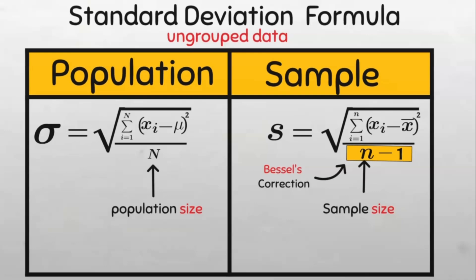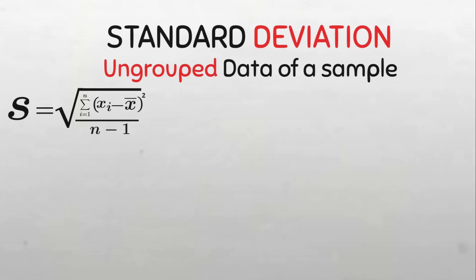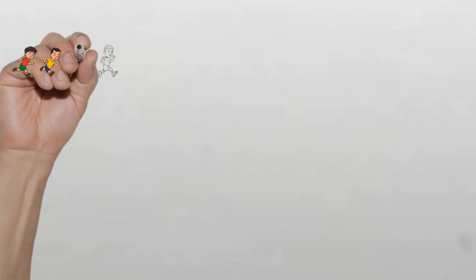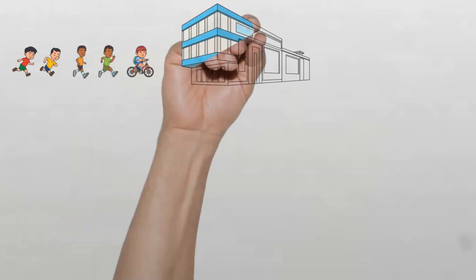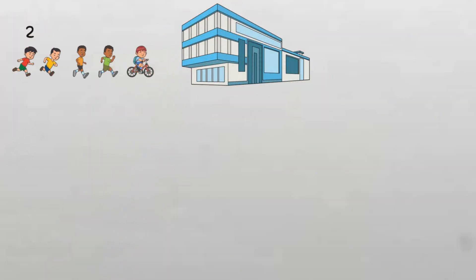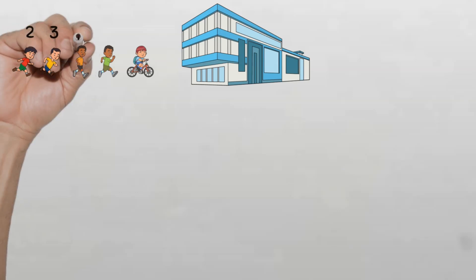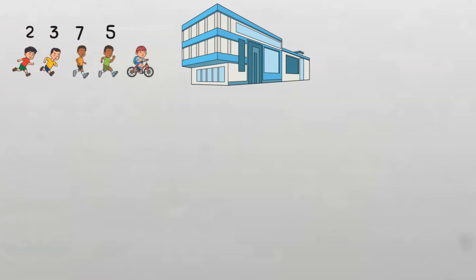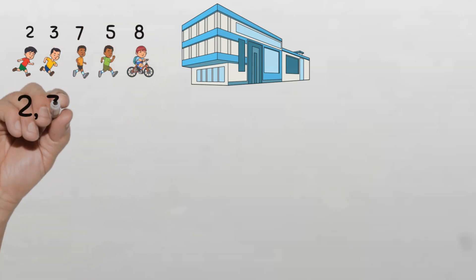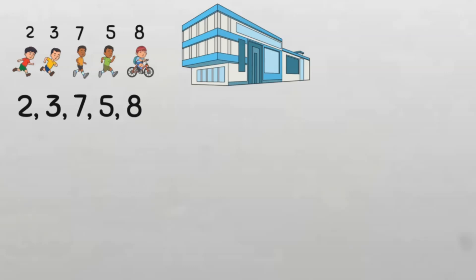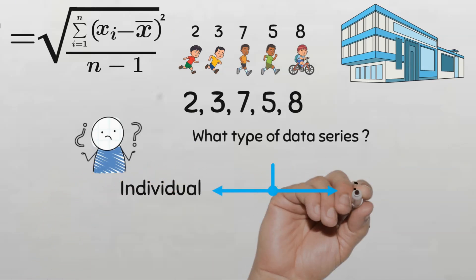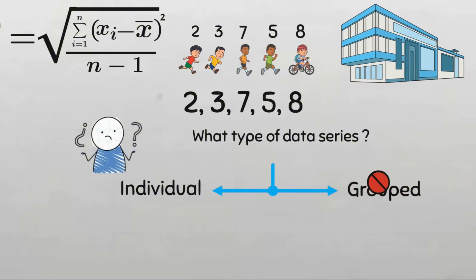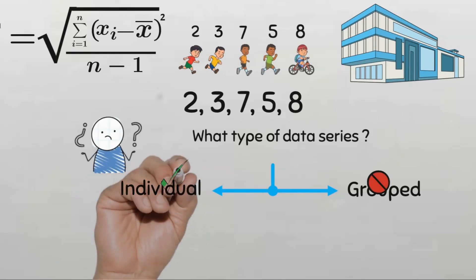We now know the formula for computing the standard deviation for the sample. Let us use this formula to find the standard deviation of this individual series or ungrouped data set of the number of times a sample of five children visited the computer training center in a community in Samaruzaria, Nigeria in the last one month. The first child visited twice, the second child three times, the third child seven times, the fourth child five times, and the last child — since he has a bike — visited eight times. So our data is 2, 3, 7, 5, and 8. This data is ungrouped because each number represents data from one child or one individual, so we call it individual series data.